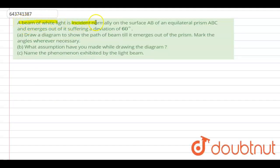beam of white light is incident normally on the surface AB of an equilateral prism ABC and emerges out of its suffering of deviation of 60 degree. Now make the diagram according to the question.